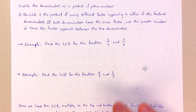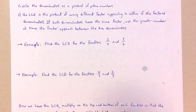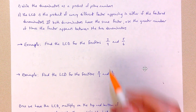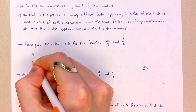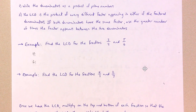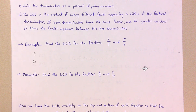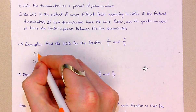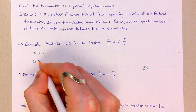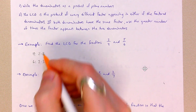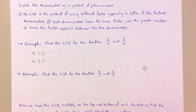We're going to find the LCD, least common denominator, for the fractions three-fourths and five-sixths. I'm going to take my denominators of four and six and write each of these as a product of prime numbers. The first few prime numbers are two, three, five, seven, eleven, and thirteen. Four is two times two, and six is two times three. Two and three are prime numbers.